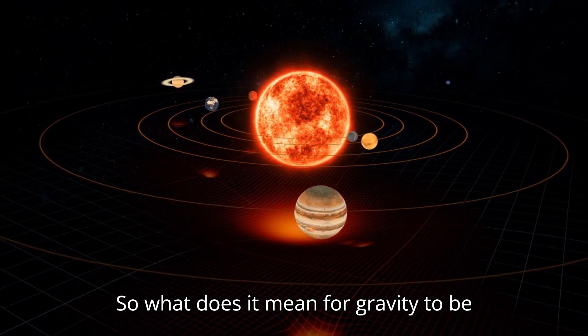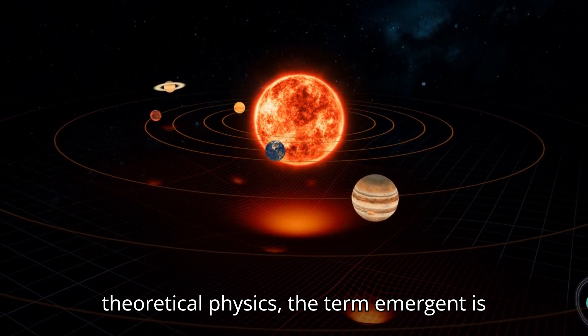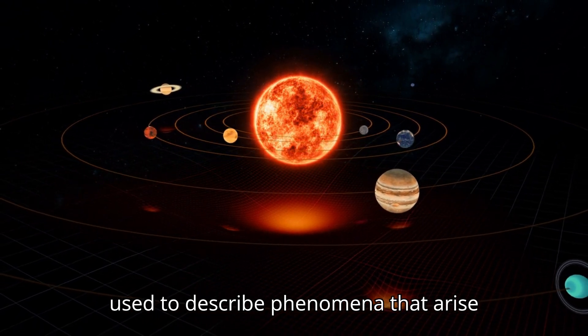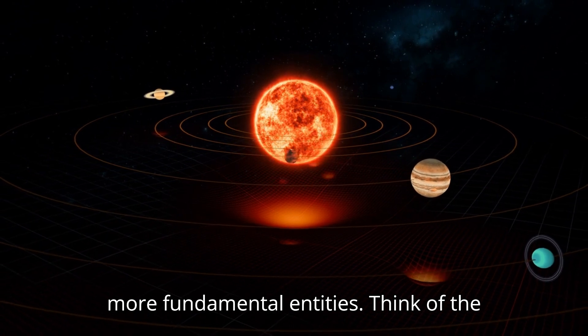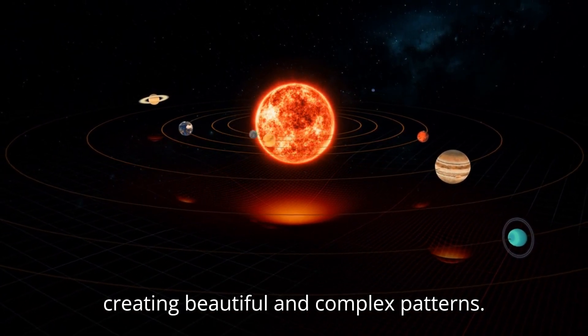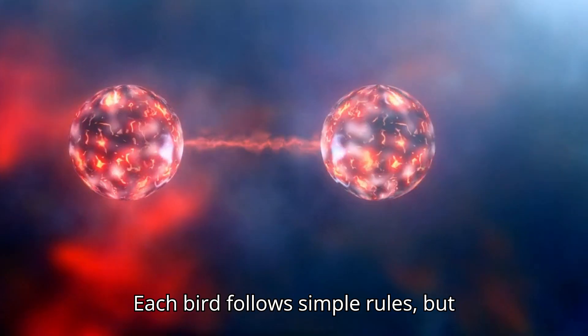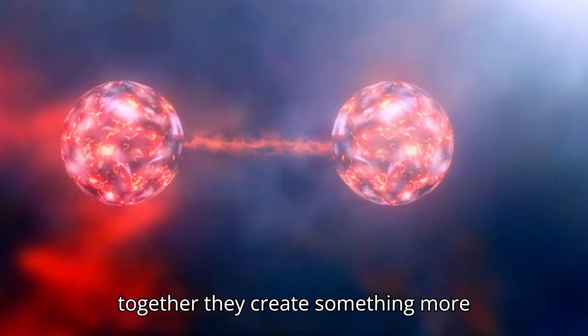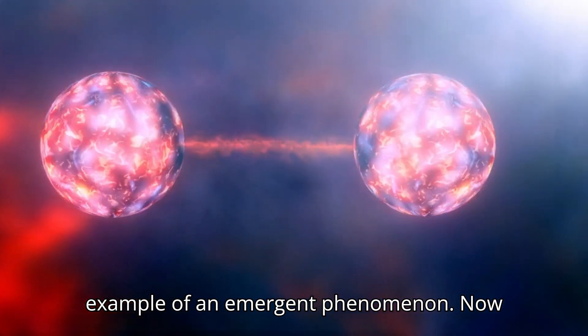So what does it mean for gravity to be emergent? Well, in the realm of theoretical physics, the term emergent is used to describe phenomena that arise from the collective behavior of simpler, more fundamental entities. Think of the way a flock of birds moves in unison, creating beautiful and complex patterns. Each bird follows simple rules, but together they create something more complex, more profound. That's an example of an emergent phenomenon.